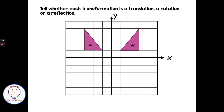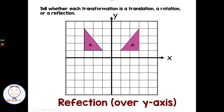Tell whether each transformation is a translation, rotation, or reflection. First I need to figure out my beginning point, labeled A, and my new copy, the image, is A prime. To go from A to A prime: it started one to the left of the y and went one to the right; this point started three to the left and is now three to the right of the y. So it looks like it was just reflected over the y-axis — a good example of being reflected.